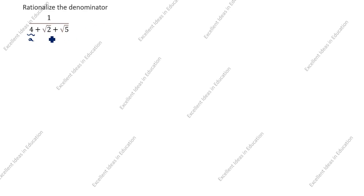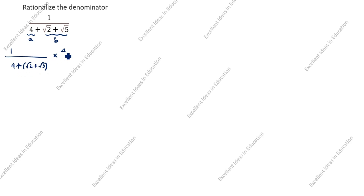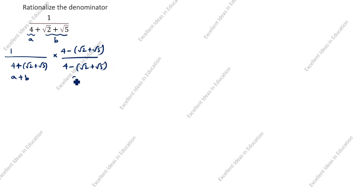We will take this as A and this as B. So we have 1 divided by 4 plus root 2 plus root 5, and since the denominator is plus, we multiply by the conjugate with minus: 4 minus root 2 plus root 5 divided by 4 minus root 2 plus root 5. This is the A plus B format, and this is the A minus B format. The formula is A plus B into A minus B equals A square minus B square.